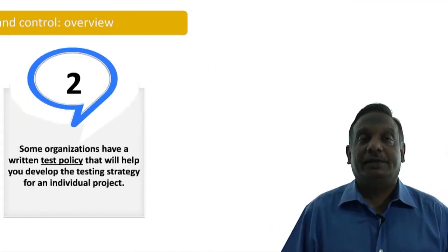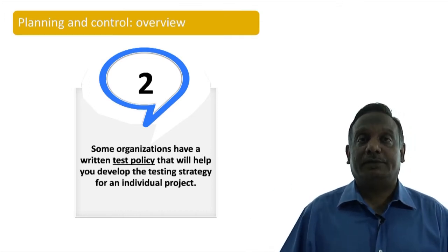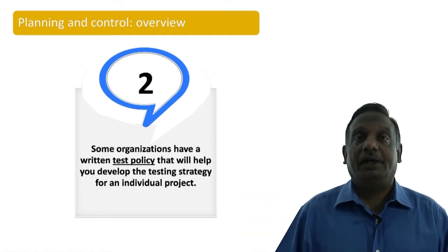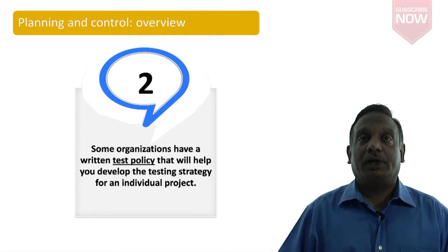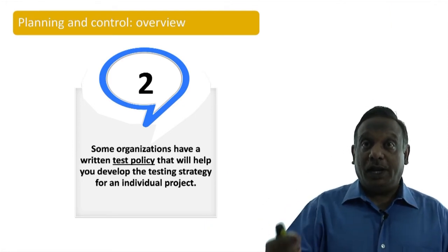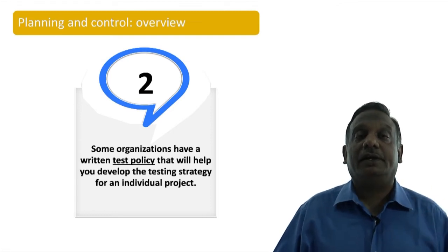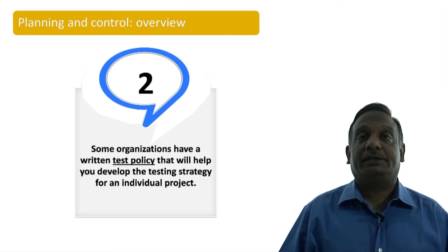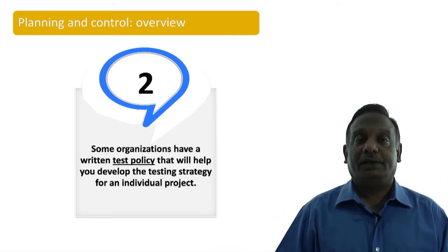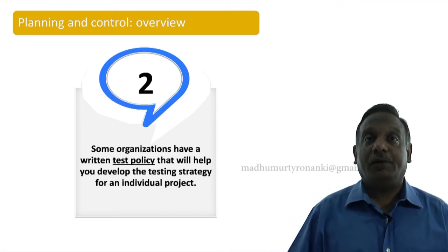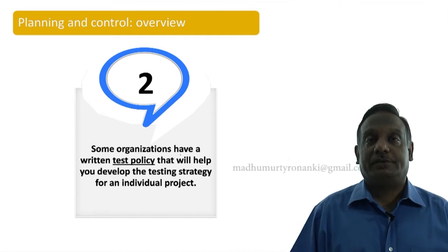A lot of organizations have what we call a written test policy. Especially if you are working with CMMI level 5 kind of companies — they are very process-oriented companies. They have a testing policy within the company: what kind of software they will deliver, with what kind of quality. While you are doing a test planning exercise, if you are working in such organizations, you have to understand very well what is written in your test policy about how to conduct testing and what end goals you have to achieve. You develop the testing strategy for an individual project based on the guidelines from your test policy document. Every large company has their own test methods or test processes — you have to understand them.